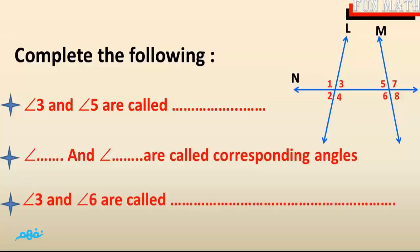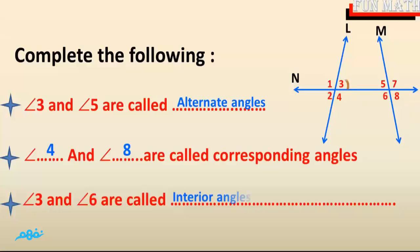Angle 3 and angle 6 are called interior angles on one side of the transversal. Angle 3 and angle 5 are called alternate angles. Angle 4 and angle 8 are called corresponding angles. Angle 3 and angle 6 are called interior angles on one side of the transversal.